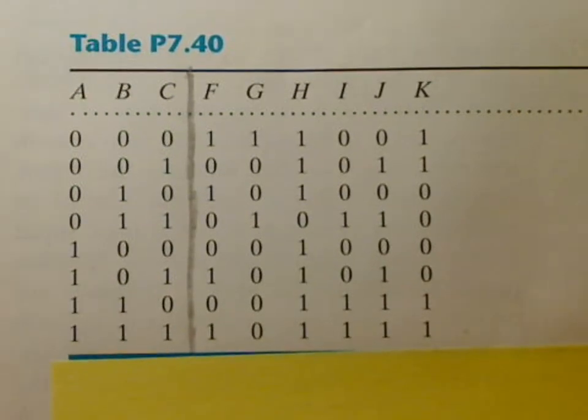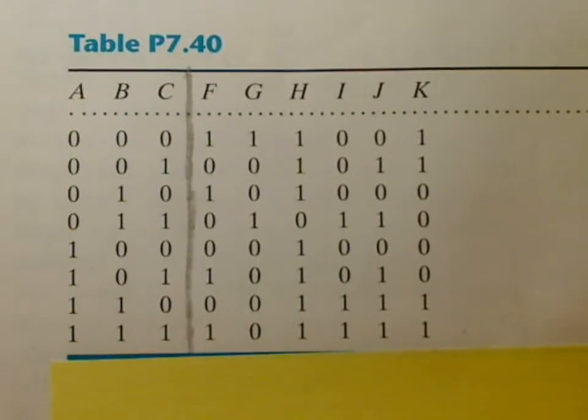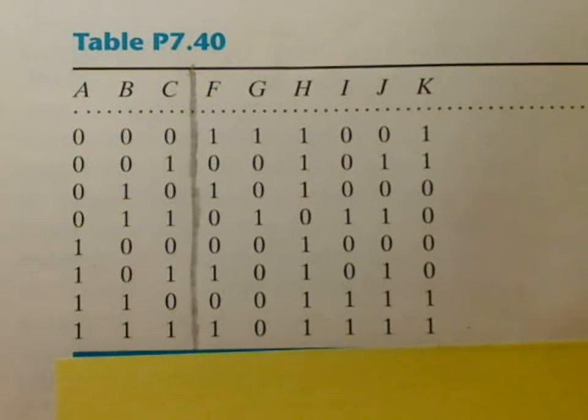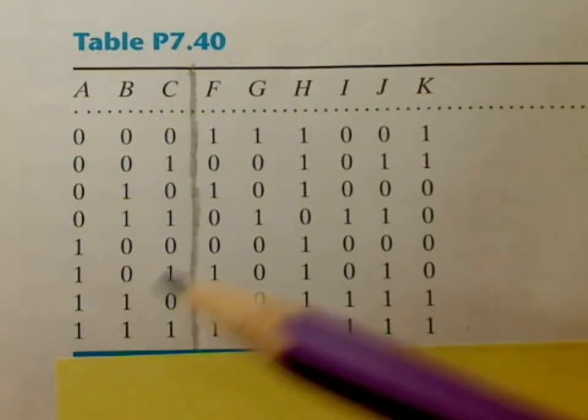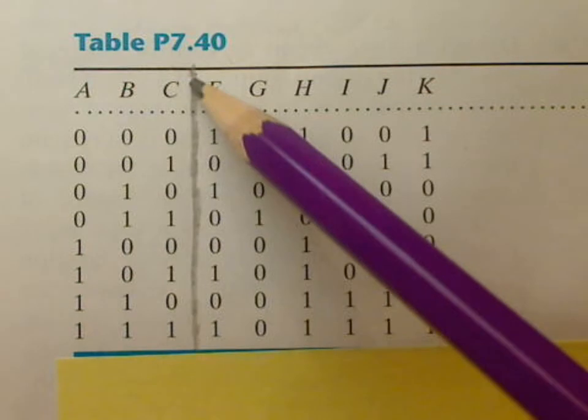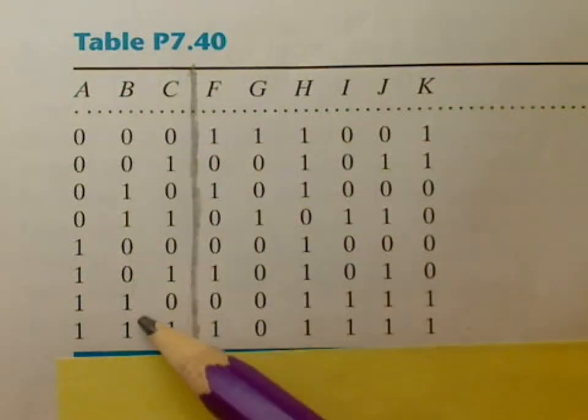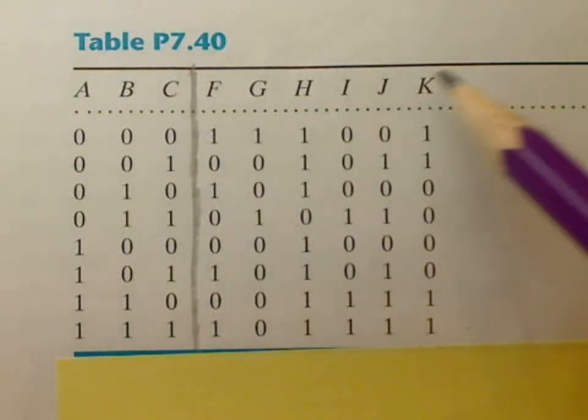Okay, this is table P7.40 on page 399, and what we're going to do here is realize that the columns A, B, and C are inputs, and these are outputs.